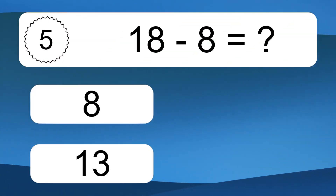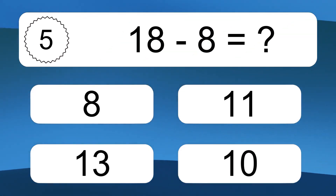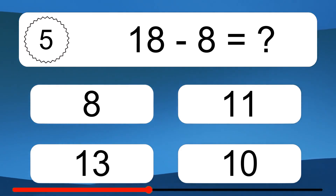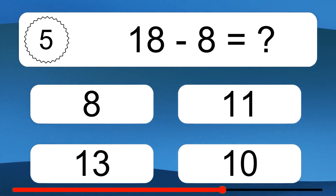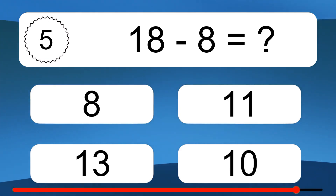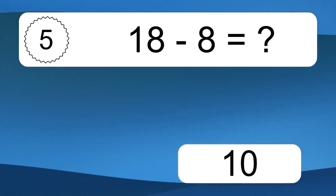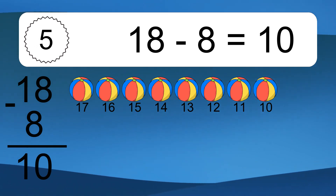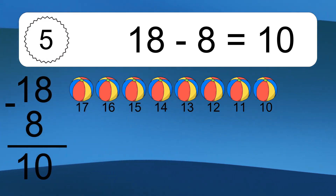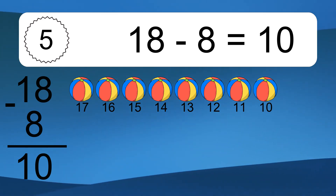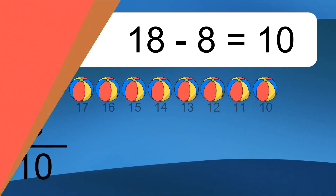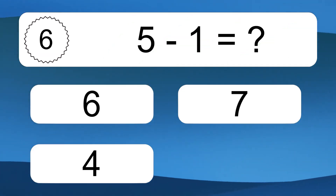18 minus 8 equals what? 18 minus 8 equals 10. Let's count it: 17, 16, 15, 14, 13, 12, 11, 10. 5 minus 1 equals what?